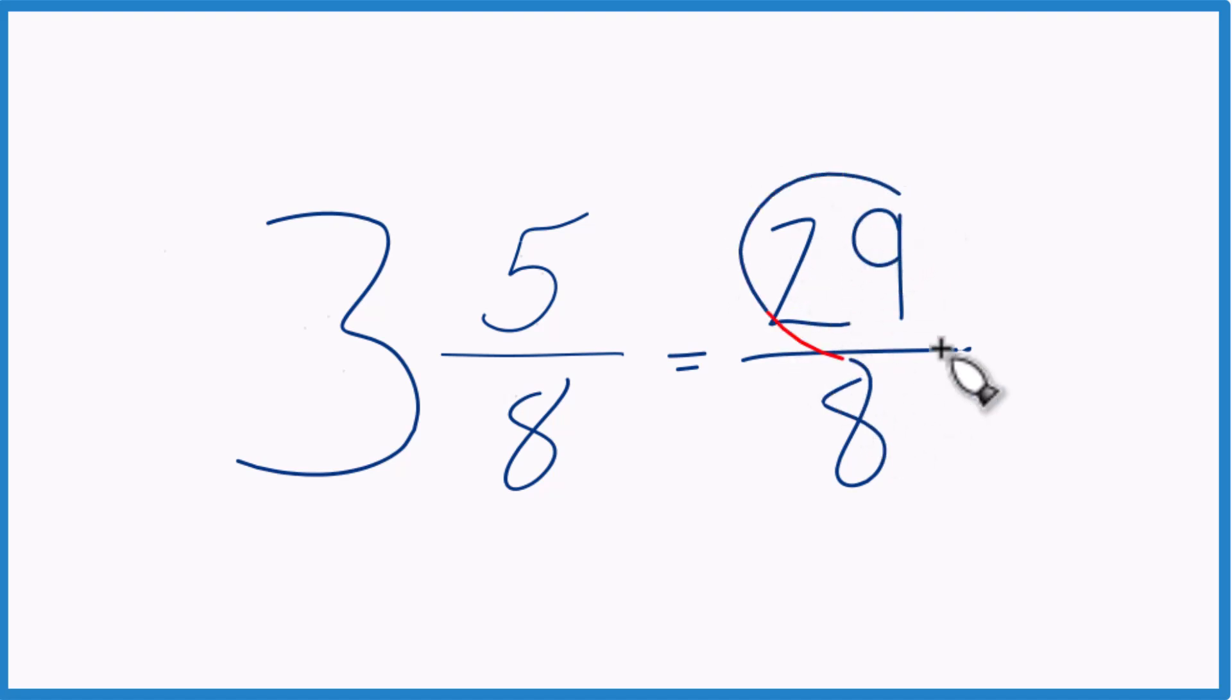And it's improper because 29, that's larger than 8. The numerator is larger than the denominator.